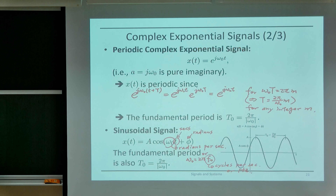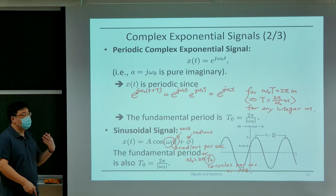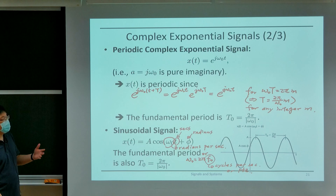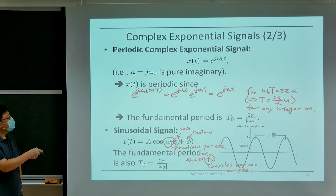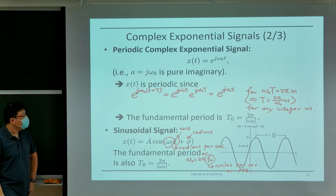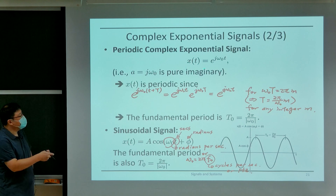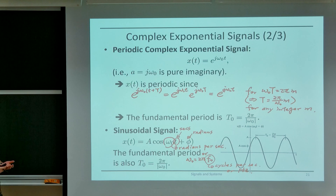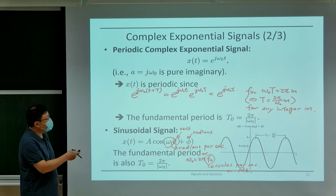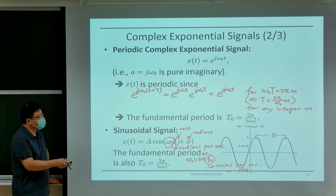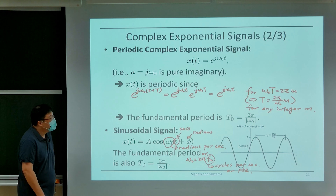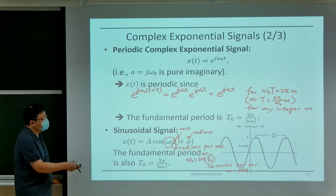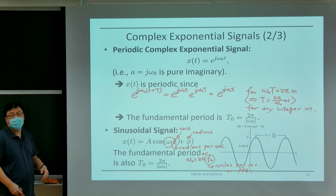The second case is when c is just some arbitrary real number, say 1, and the exponent is a pure imaginary — meaning we pick a equal to j times some number ω₀. In this case, we showed that this becomes a periodic signal with fundamental period T₀ equal to 2π over |ω₀|. We put an absolute value here because the fundamental period should be positive.